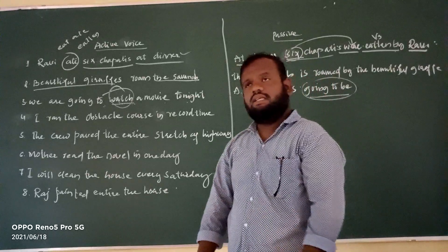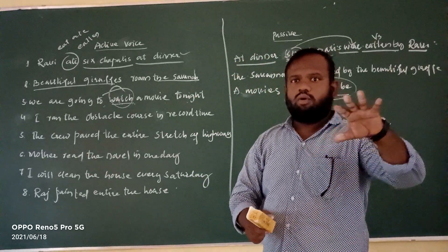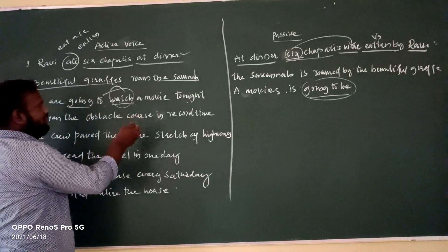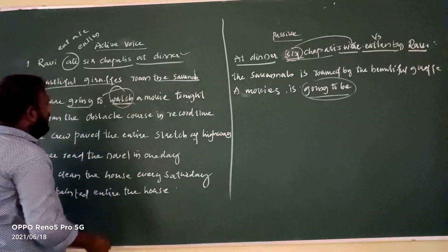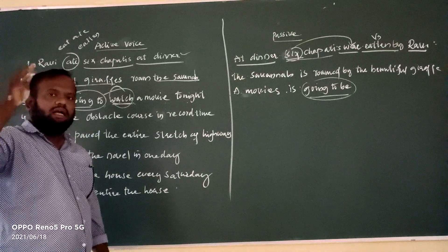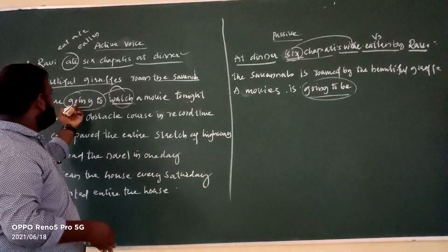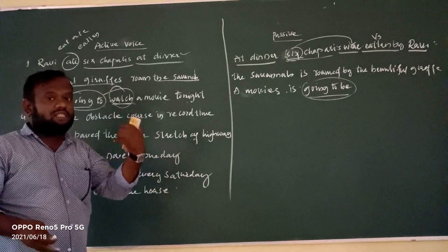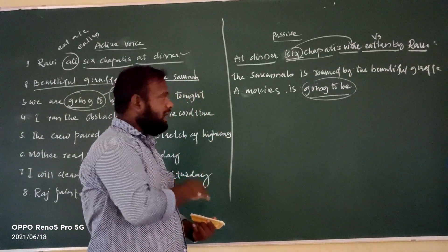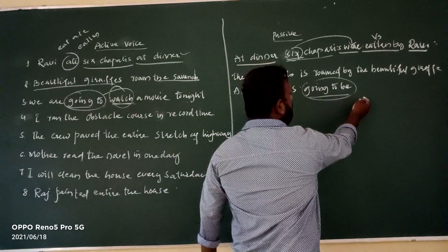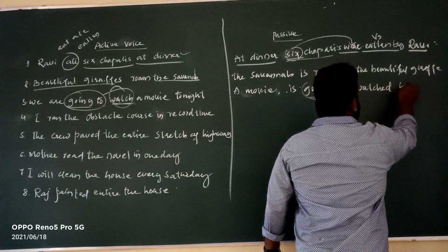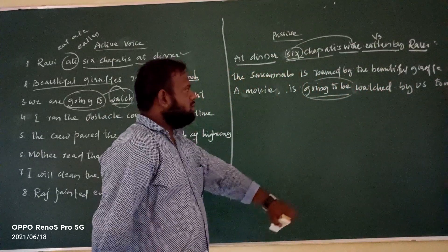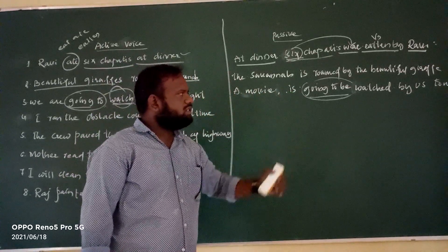Here the verb is 'watch.' You might think 'going' is the verb, but in this sentence there are two different verbs — 'go' and 'watch.' 'Going' is functioning as a helping verb or inactive verb, while 'watch' is the active main verb. So the passive sentence is: 'A movie is going to be watched by us tonight.'